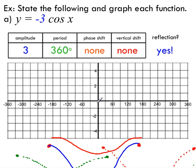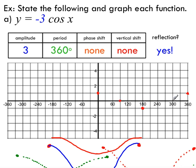I know cos goes through one complete cycle in 360 degrees, so it ends back at one at x equals 360. Halfway through the period, at 180 degrees, it reaches its minimum of negative one. Then we plot the x-intercepts halfway between the max and min: at 90 and 270 degrees. Those are the five key points — connect them with a smooth curve and you've got your original cos graph.